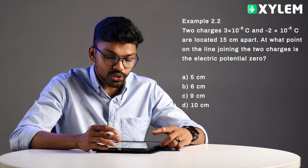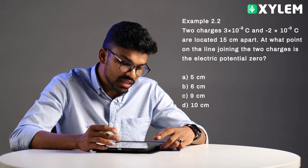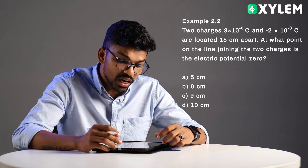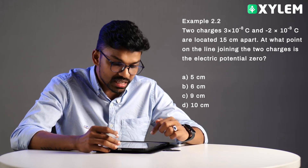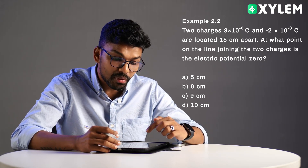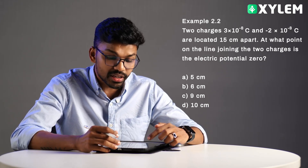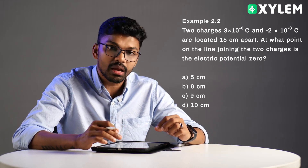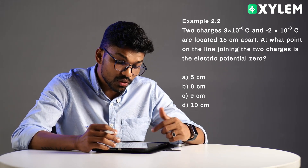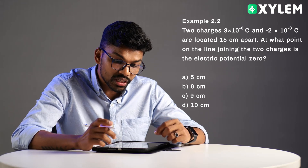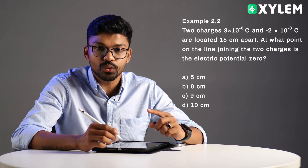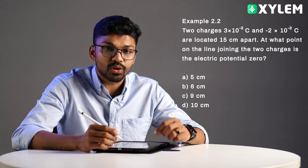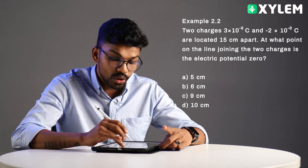Moving to the next example, Example 2.2. The question is: two charges, 3×10⁻⁸ Coulomb and -2×10⁻⁸ Coulomb, are located 15 cm apart. At what point on the line joining the two charges is the electric potential zero?